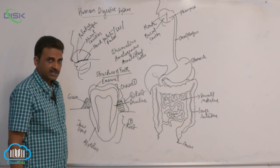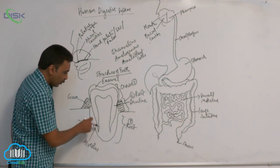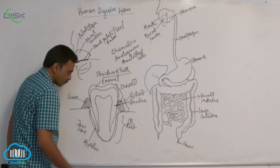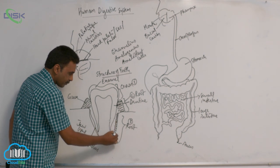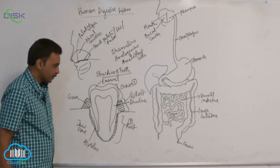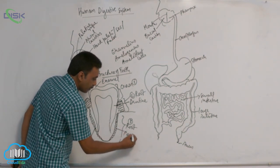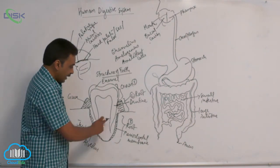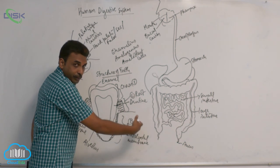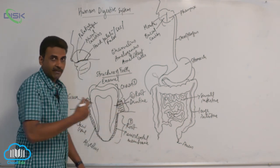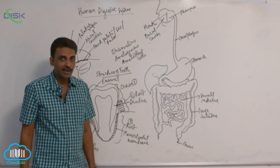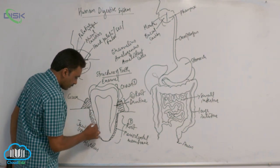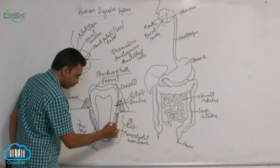Behind the enamel there is dentine. Now in between the dentine and jaw bone you can see two structures. Immediately above the jaw bone, you can see the periodontal membrane. So in the alveolar cavity, first there is periodontal membrane, which is made up of dense irregular fibrous connective tissue. That is followed by cementum.